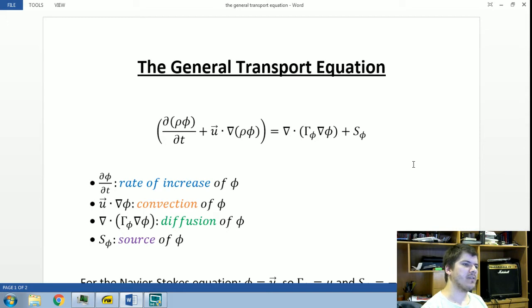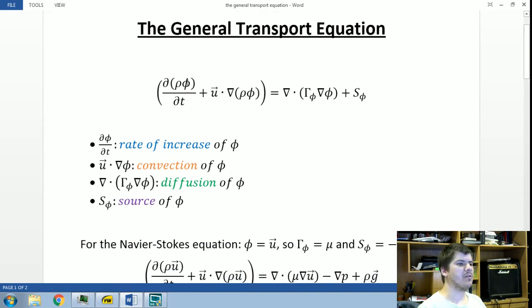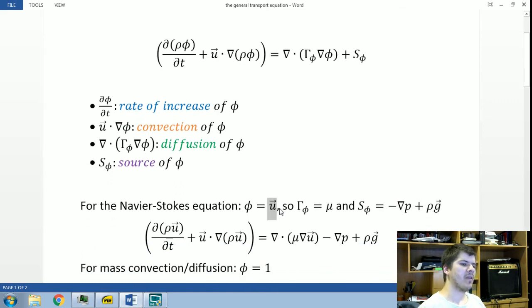This equation here is known as the general transport equation. And if we substitute phi for the velocity vector, this equation will result in the Navier-Stokes equation, which is transport equation for momentum or velocity.